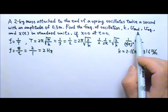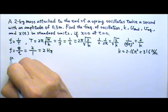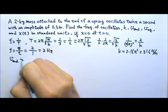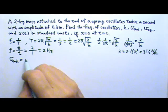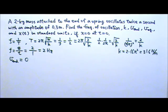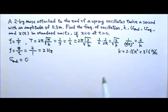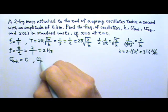Next, we want the speed at the end point. At the end point it is a turning point, so the speed is 0.